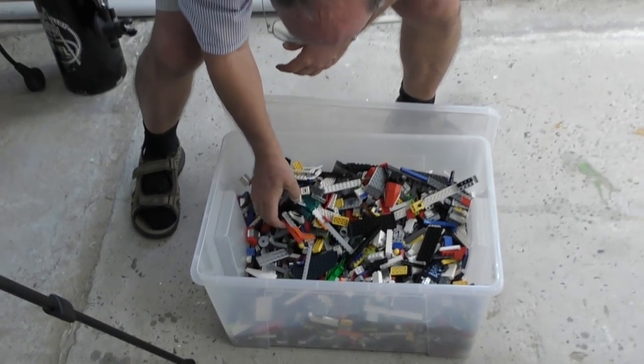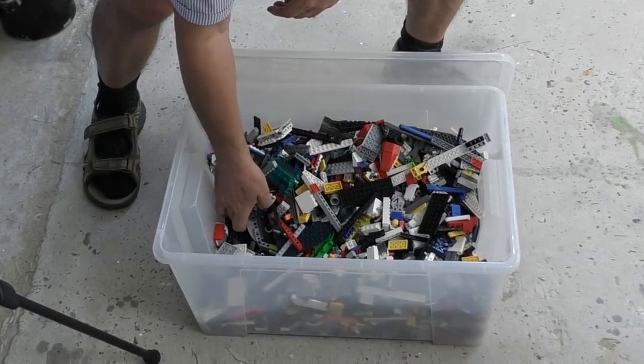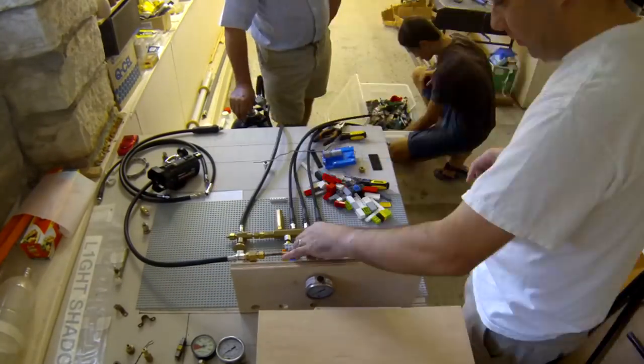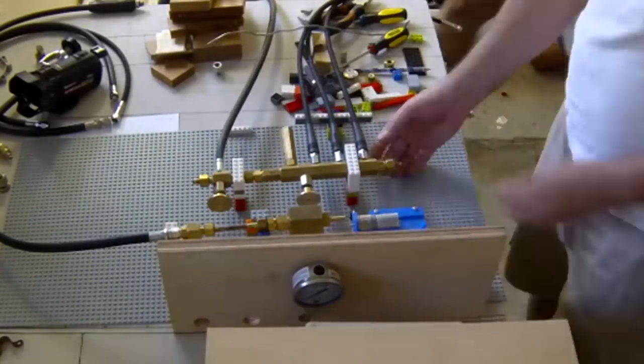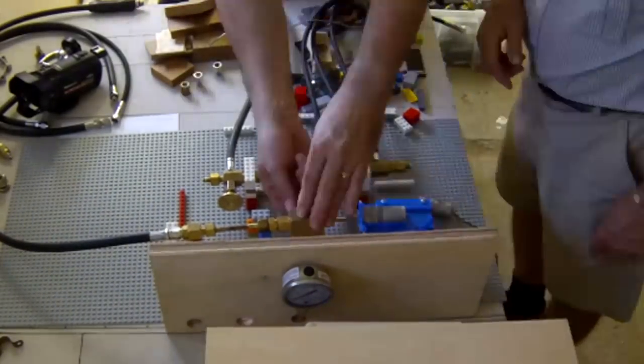Because we needed to lay out all of the components in 3D space, we grabbed the kids Lego box and created a whole bunch of supports for the different components. Now this let us move things around easily as needed.